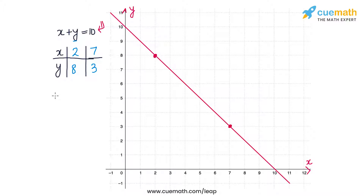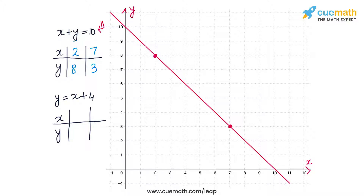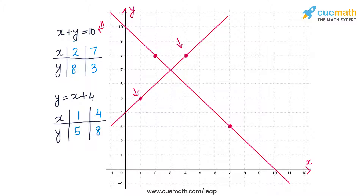The second equation was y equal to x plus 4. Once again, let's find two solutions, plot them, and draw the line through them. Making an x-y table: if x equals 1, then y equals 5; if x equals 4, then y equals 8. Two solutions are (1,5) and (4,8). Plotting these points and drawing the line through them gives us the solution line for the second equation y equal to x plus 4.